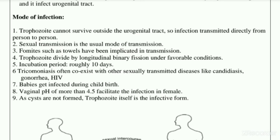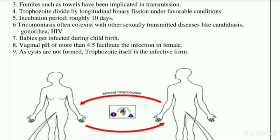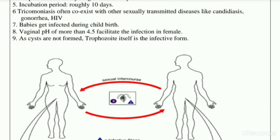The trophozoite divides by longitudinal binary fission under favorable conditions. The incubation period is roughly about 10 days. Trichomonas often coexists with other sexually transmitted diseases like candidiasis, gonorrhea, and HIV. Babies can get infected during childbirth if the mother is infected.